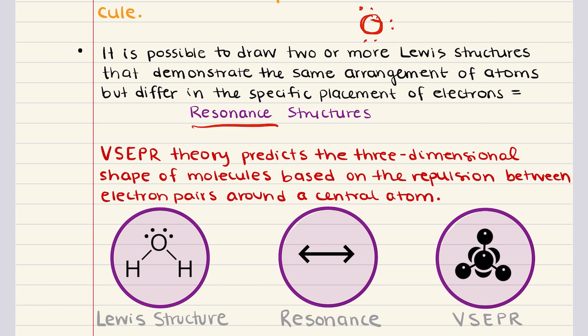This leads us into the topic of resonance. Resonance occurs when more than one valid Lewis structure can be drawn for a particular molecule. These resonance structures represent the same arrangement of atoms but differ in the placement of electrons, and they're indicated by a double-headed arrow between them. The actual electronic distribution is a hybrid of all possible resonance structures. However, Lewis structures and resonance do not suggest the actual geometric arrangement of atoms in a molecule.